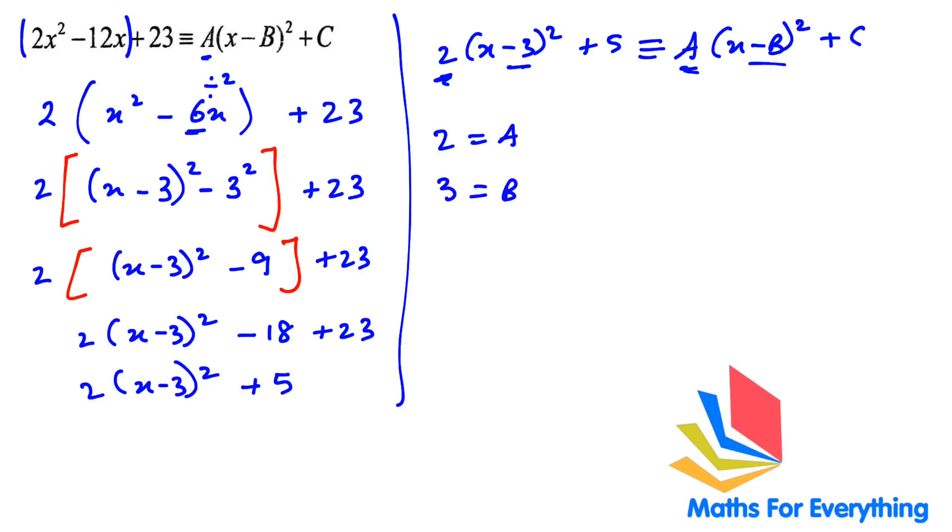The negative and the negative get cancelled out. And 5 is equal to c. So we are done with this question.